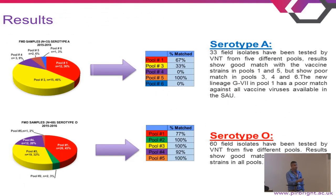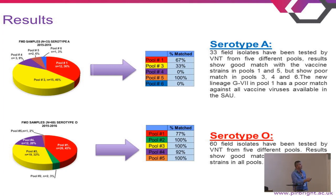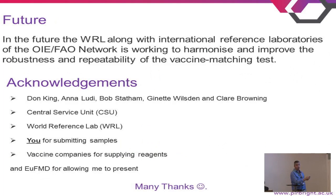Here is a brief overview of my results, with more explanation in my poster. Showing here are two pie charts for serotype A and serotype O, showing the number of samples in each pool. This table shows the percentage of field isolates matched with at least one vaccine strain. Pool number three has the lowest at 33 percent. As previous talks from my colleague showed, there is a new lineage of G7 in pool number one, which shows a high percentage of matching among field strains tested.